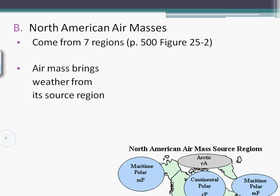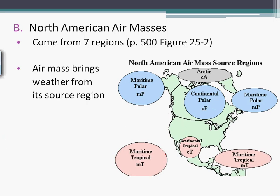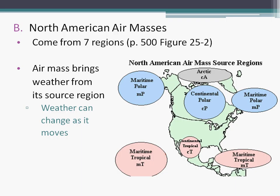North American air masses — here's us. You can see maritime polar, maritime tropical. The Arctic air mass is above North America, in the Arctic Circle. Continental polar, continental tropical, maritime tropical, maritime polar — we have all of these. And as weather moves, it affects other weather.